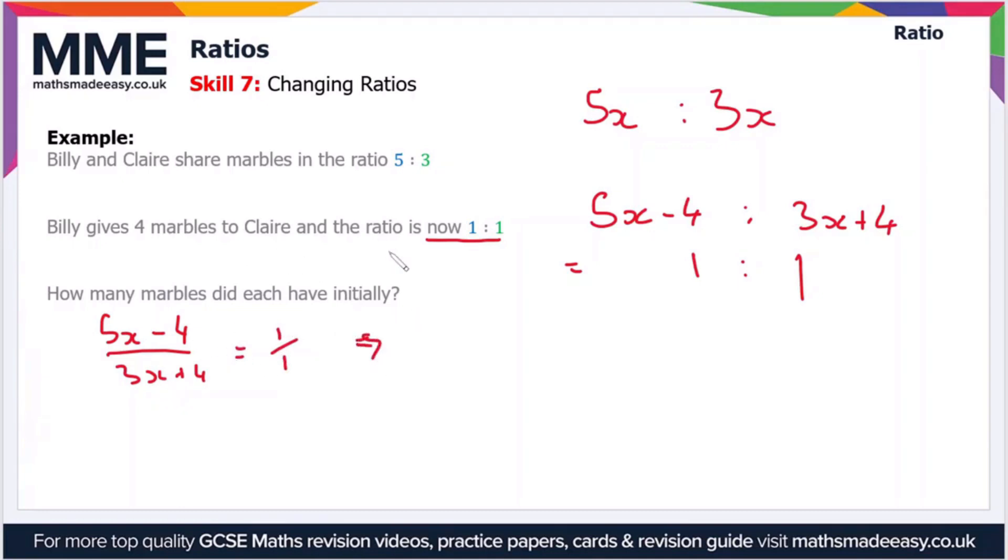So if we just bring this working out over here then 5x minus 4 is equal to 3x plus 4. Now all I've done there is I've multiplied up the denominators so we're left with this expression which we can solve for x.